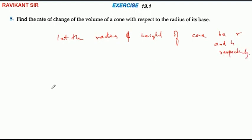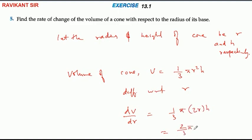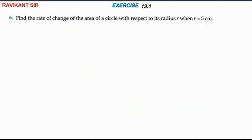If we talk about volume of a cone with respect to R, dV/dR is equal to 1/3 · π · 2RH, which simplifies to 2/3 · π · RH.